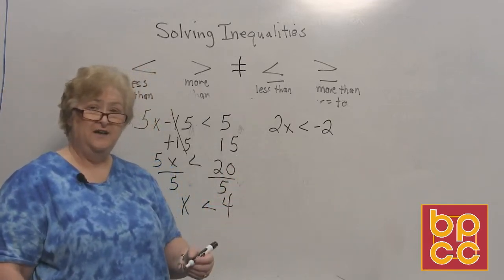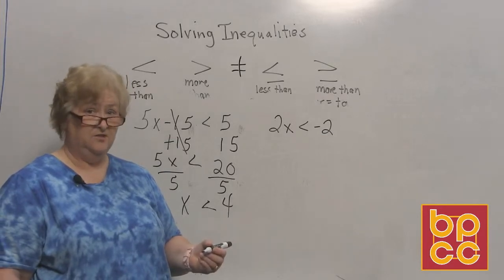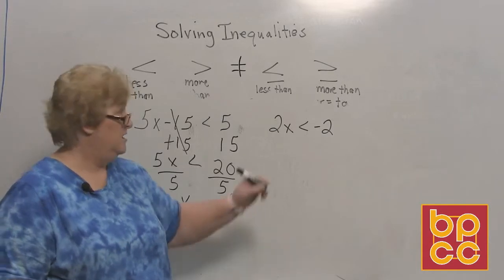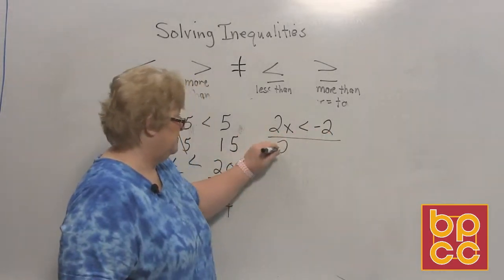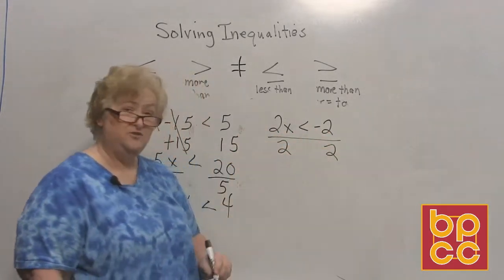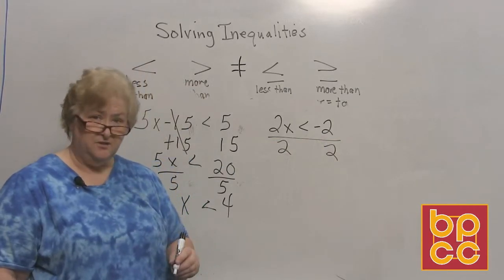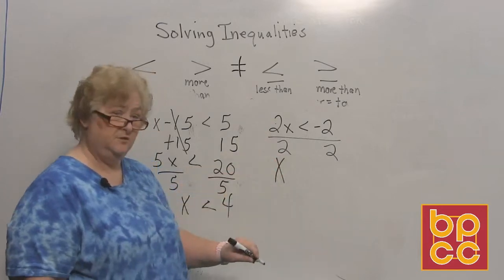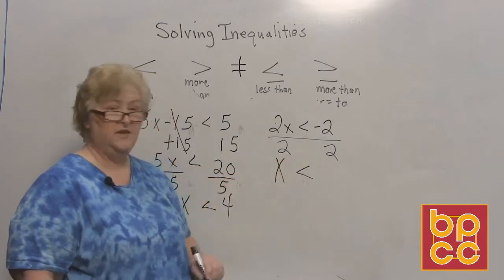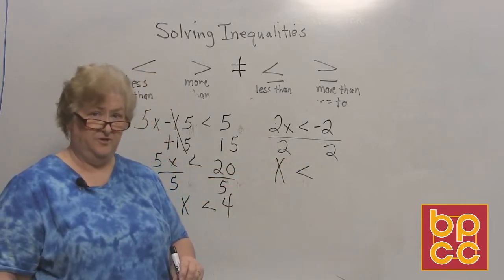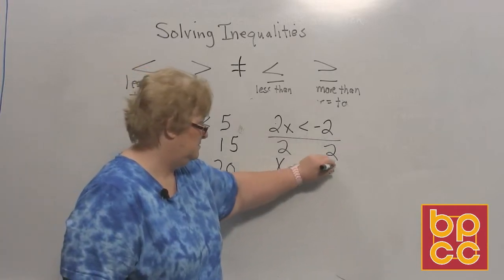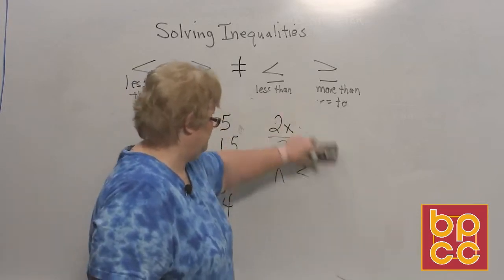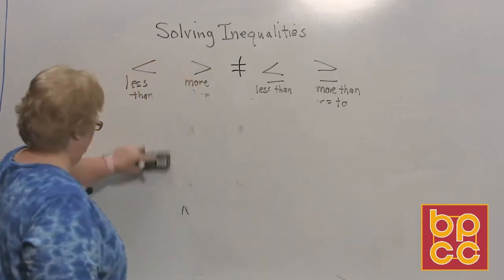Okay, let's try this one. There's not much to do here — we have the variable on one side and the number on another side. All we need to do is divide by the number of x's we have. Divide both sides by 2. There's no sign change because the variable is positive. 2 into 2 is 1x, the sign remains the same, and 2 into a negative 2 is a negative 1.